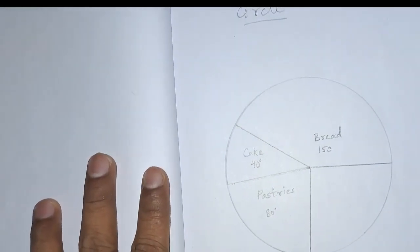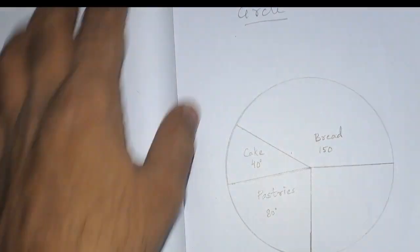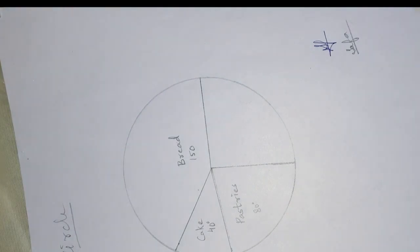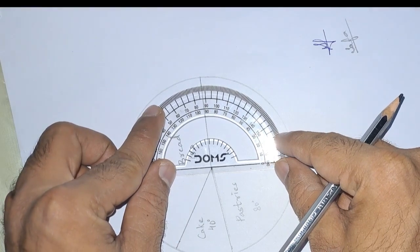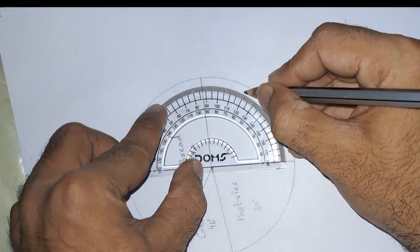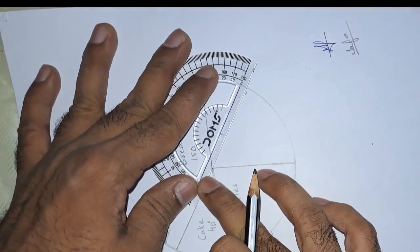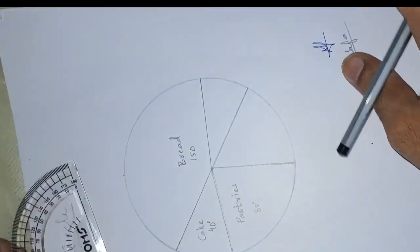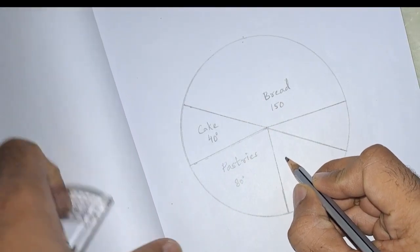Next, after that, we are having biscuits, 60 degrees. Biscuits, 60 degrees.